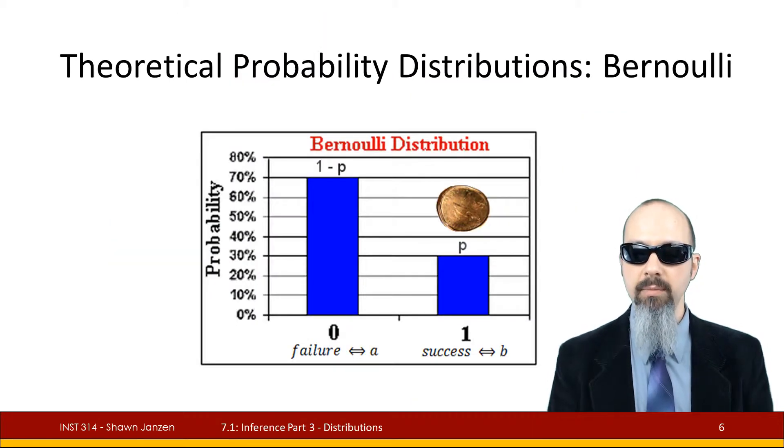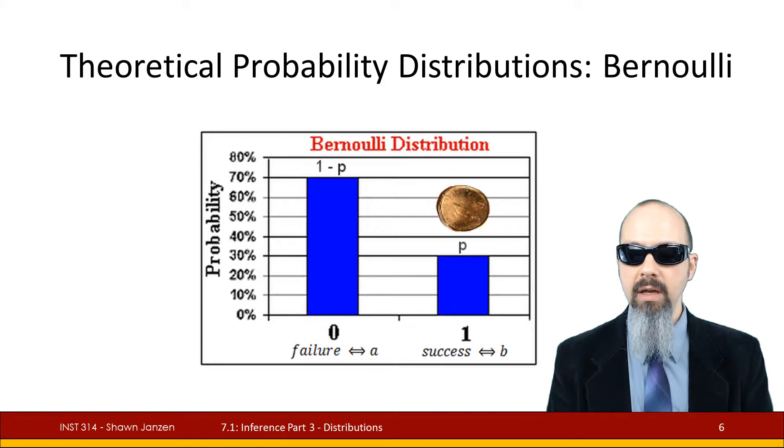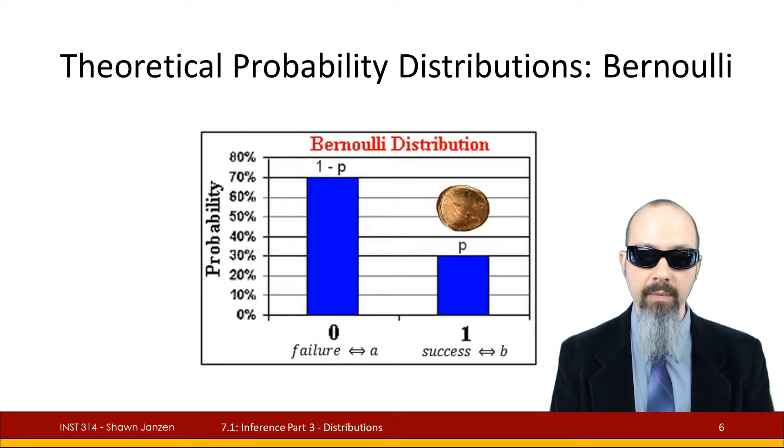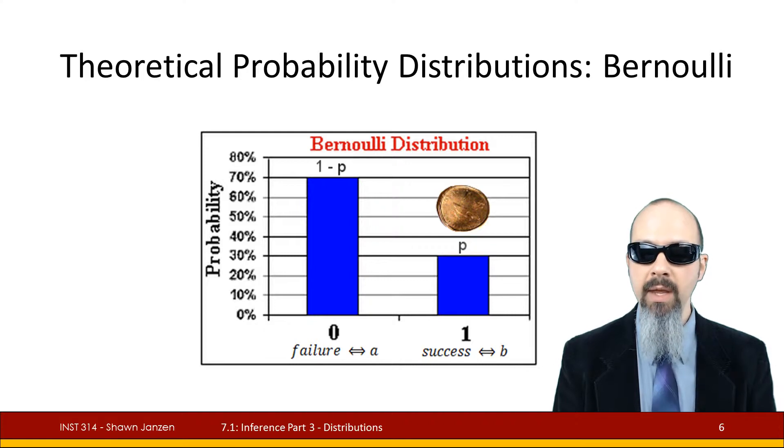Let's talk first about the Bernoulli distribution. The Bernoulli distribution is generally characterized by just having two possible outcomes. You can think of it as a success or a failure. And success or failure doesn't always mean that you have won something or lost something. It just means that you have two possible outcomes and only one of them was chosen and the one that was not is considered a failure.